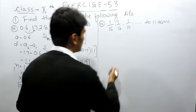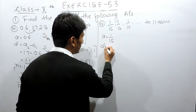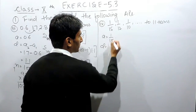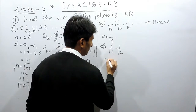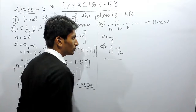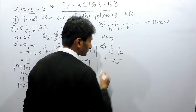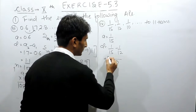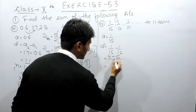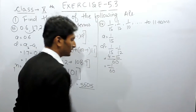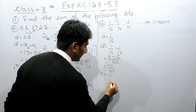In this case the first term is given as 1 upon 15. To find the common difference, you have to subtract 1 upon 15 from 1 upon 12. To find the difference between these two fractions, we take the LCM. The LCM of 15 and 12 is 60, giving 4 upon 60 minus 5 upon 60, which is minus 1 upon 60. So the common difference is minus 1 upon 60 and the number of terms is 11.